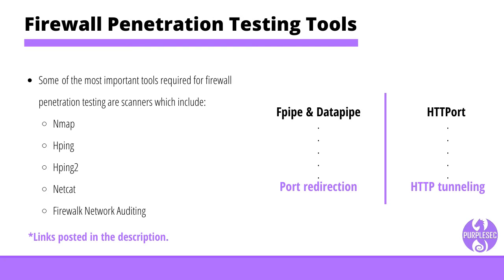Firewall penetration testing tools. The most important tools needed are scanners, including Nmap, HPing, HPing2, Netcat, and Firewalk. These scanners allow the tester to customize packets and elicit responses from the firewall, enabling determination of port states, running services and their versions, banner grabbing, and vulnerability identification. FPipe and Datapipe tools can be used when attempting port redirection, and the HTTP port tunneling tool can be used when attempting HTTP tunneling.